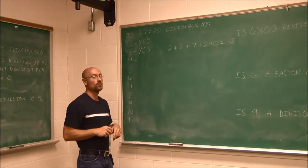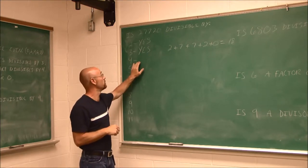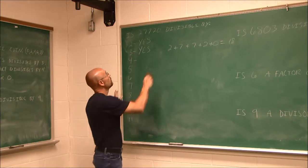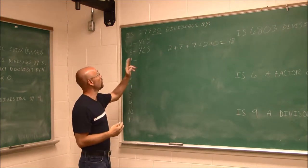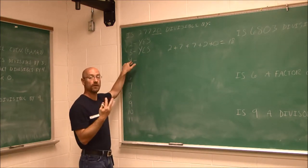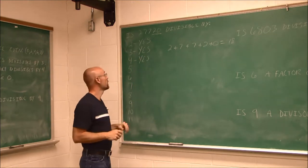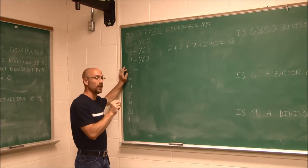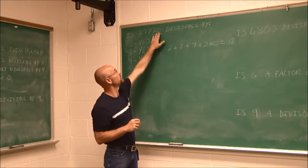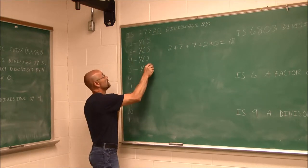What about 4? The rule says if the last two digits are divisible by 4, then the whole number is divisible by 4. The last two digits of 27,720 are 20. 20 is divisible by 4 — it goes in 5 times. So yes, it is divisible by 4. For 5, the rule says it must end in 5 or 0. The number ends in 0, so it is divisible by 5.